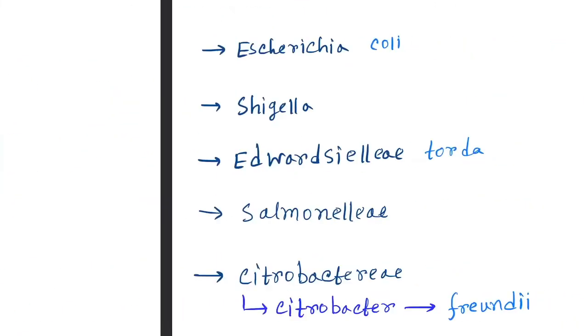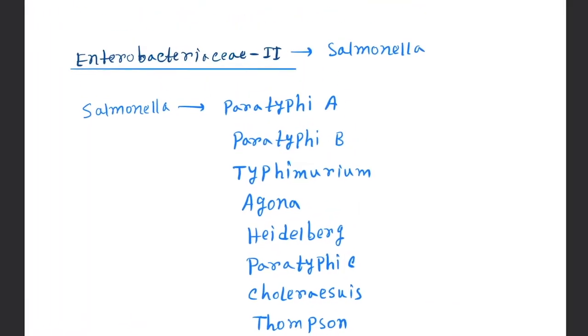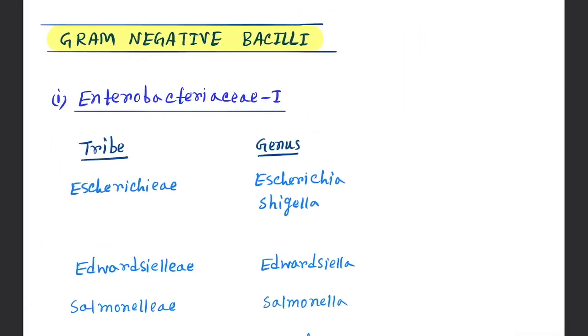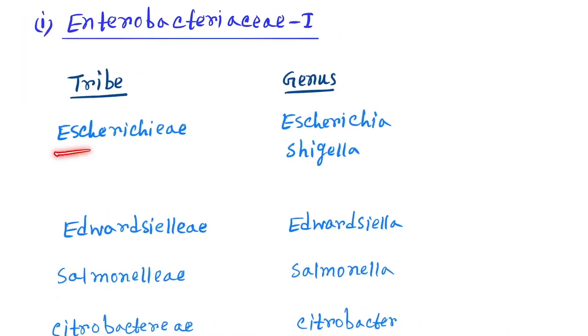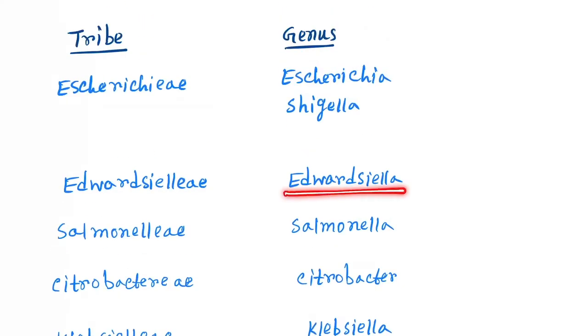So first discuss Enterobacterium 1. Here tribe Escherichieae, under Escherichiaceae family. They are Escherichia and Shigella. Next is Edwardsiella, the bacteria is Edwardsiella.